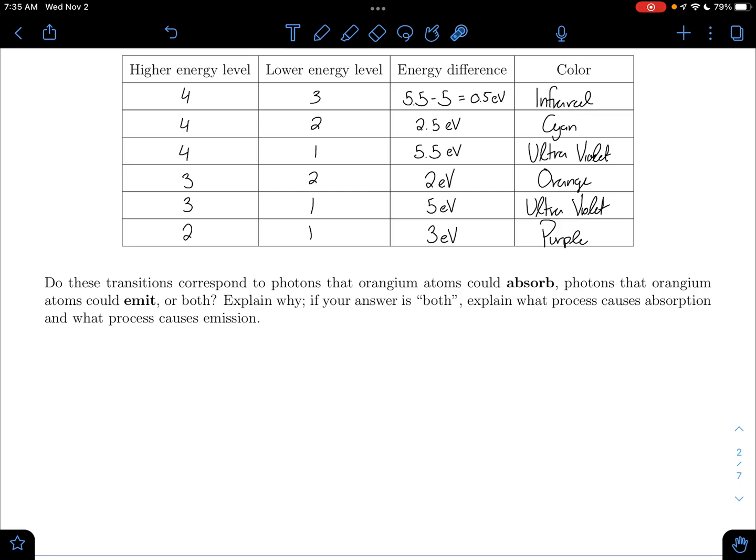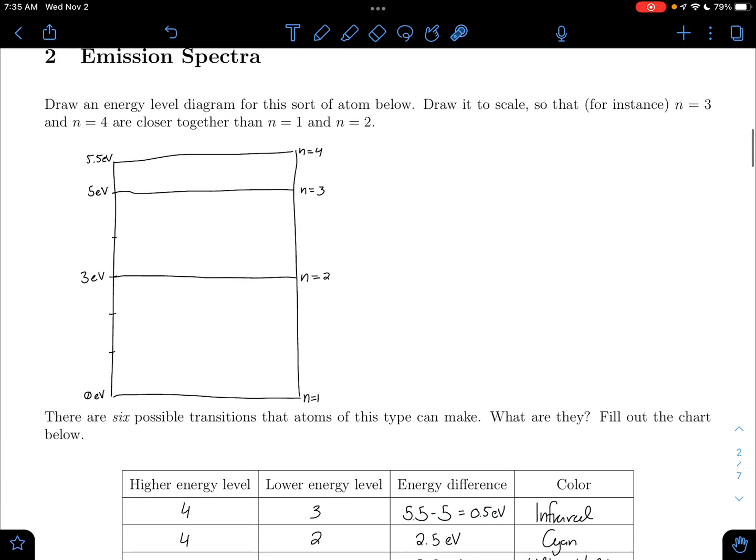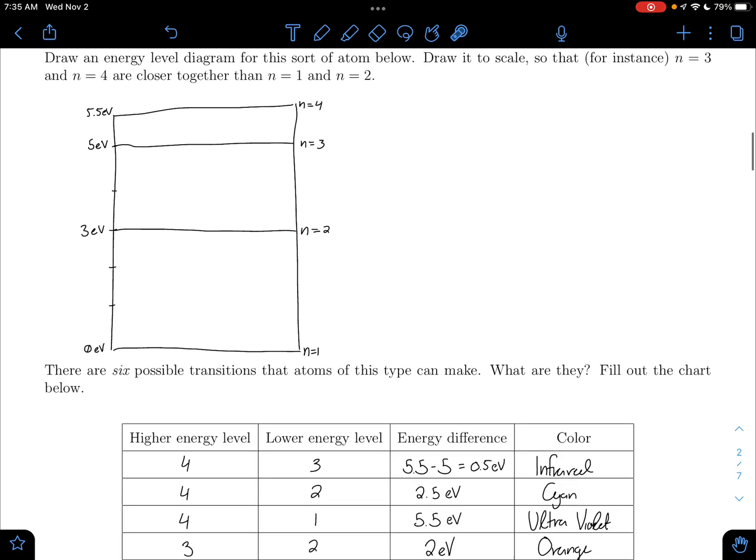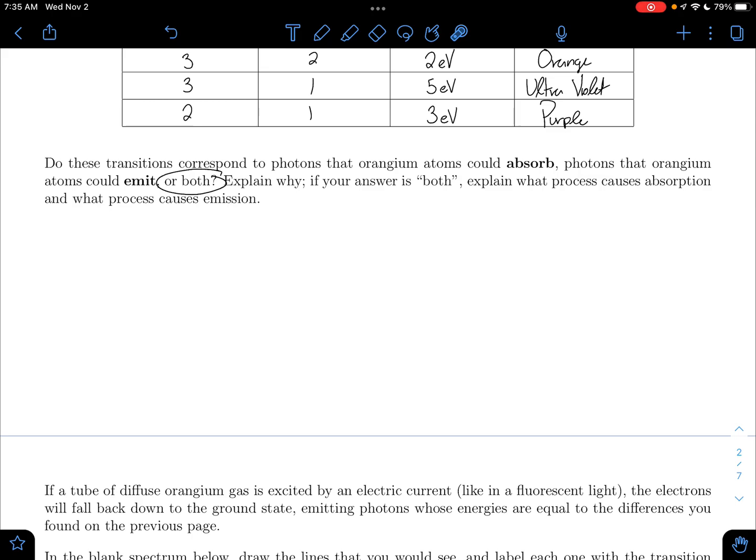And I kind of touched on this, but is this photons that the orangium could absorb or emit or both? It's both. The only difference, if I'm absorbing a photon, I'm getting that energy. I'm increasing my energy. So I'm going to be increasing my height. I'm going up in my elevator. If I'm emitting a photon, I'm getting rid of that energy. So I'm decreasing my energy. So I'm decreasing my height. So I'm going down in my elevator. But the steps are the same. If I go up from 2 to 3, that's absorbing a 2 eV photon. If I go down from 3 to 2, that's emitting a 2 eV photon. So it's going to be absorbing and emitting.